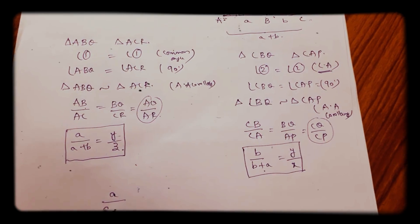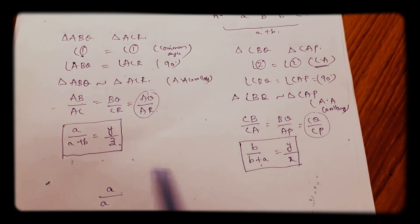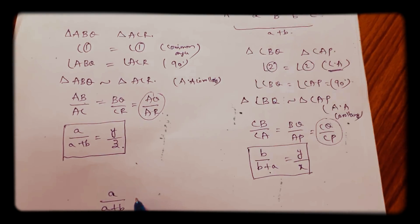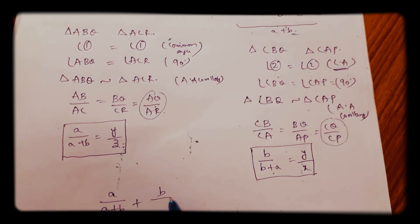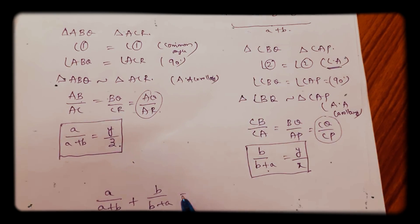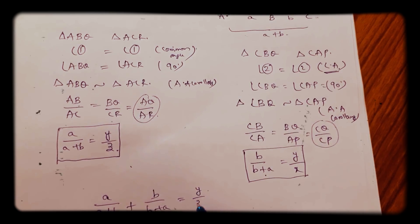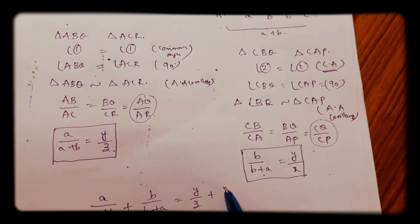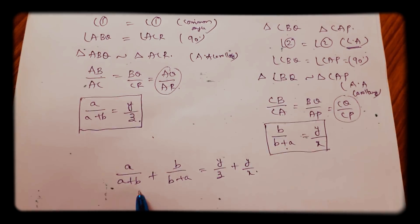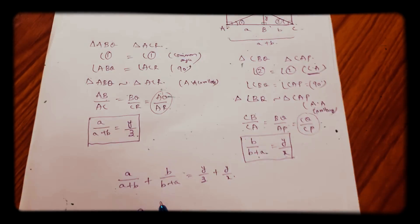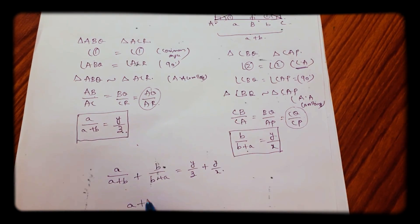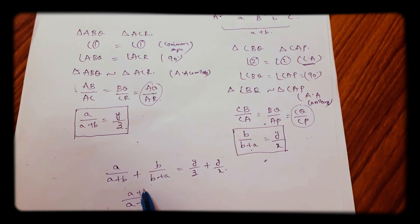Add LHS and LHS, and equals RHS plus RHS: A/(A+B) + B/(B+A) = Y/Z + Y/X. LCM is same, A + B, and here A + B.